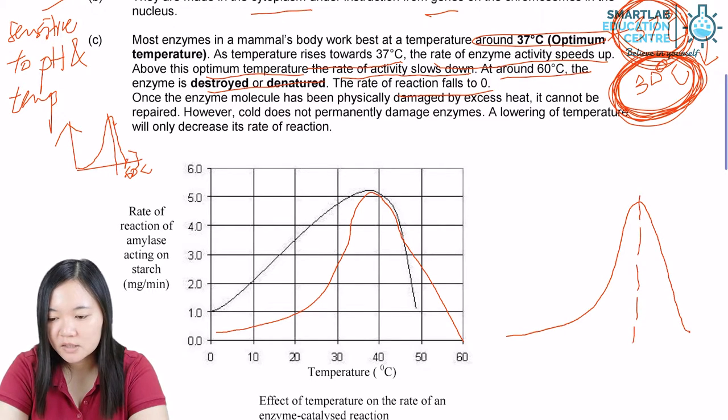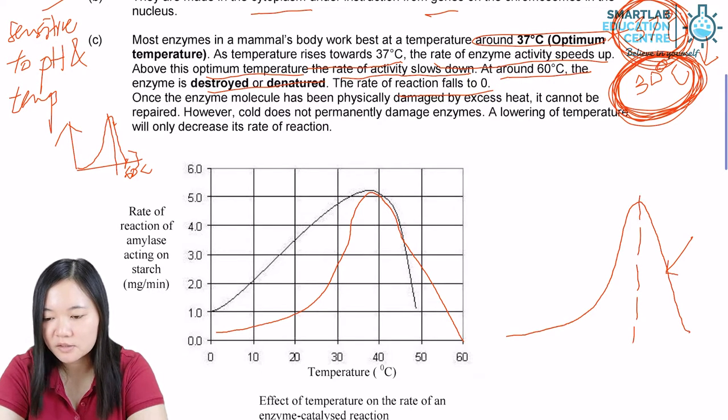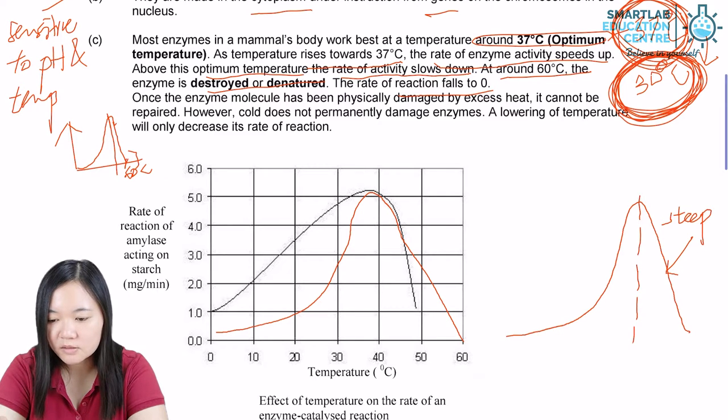Now, this downward slope is very steep, while this one is less steep.